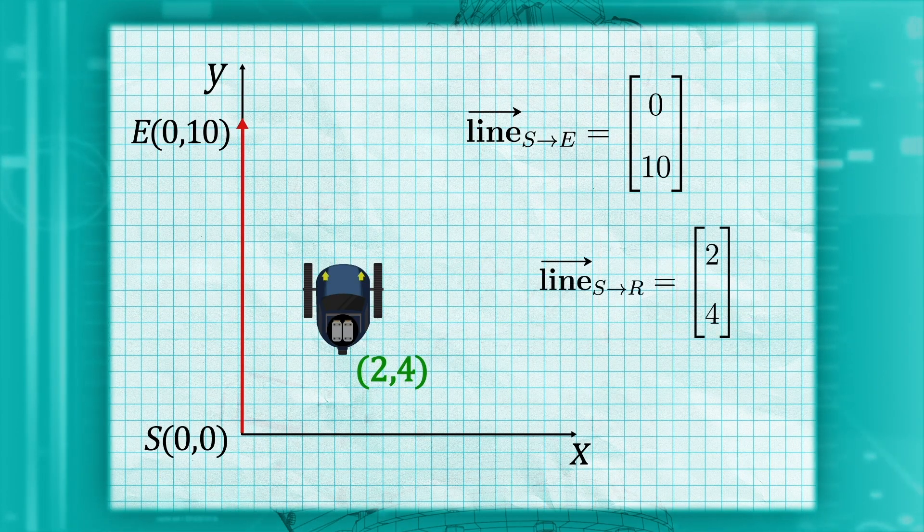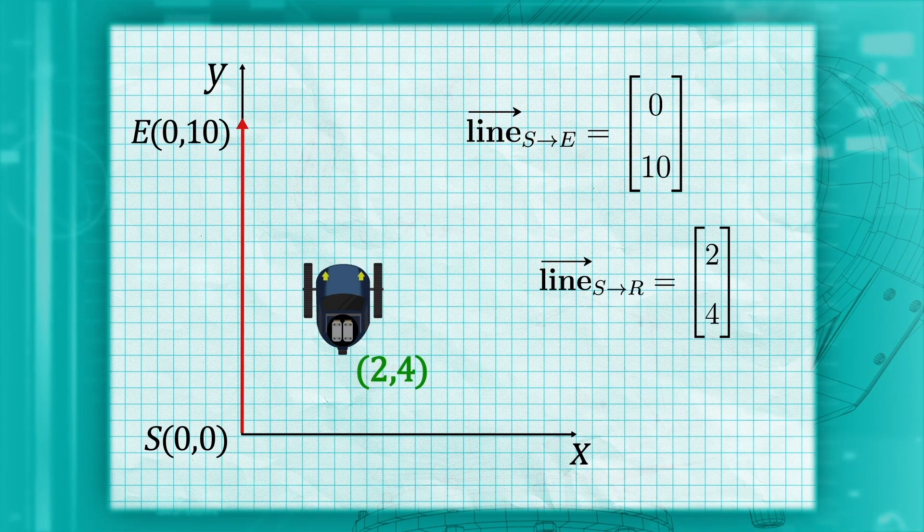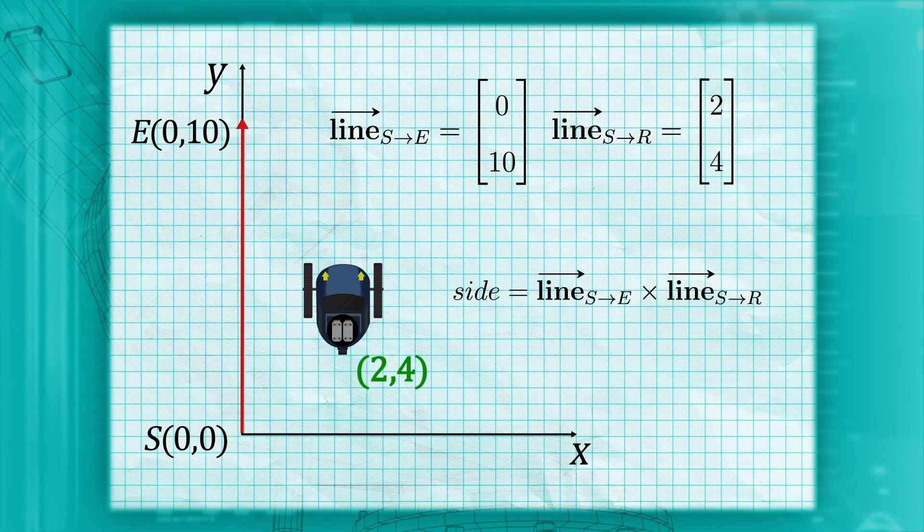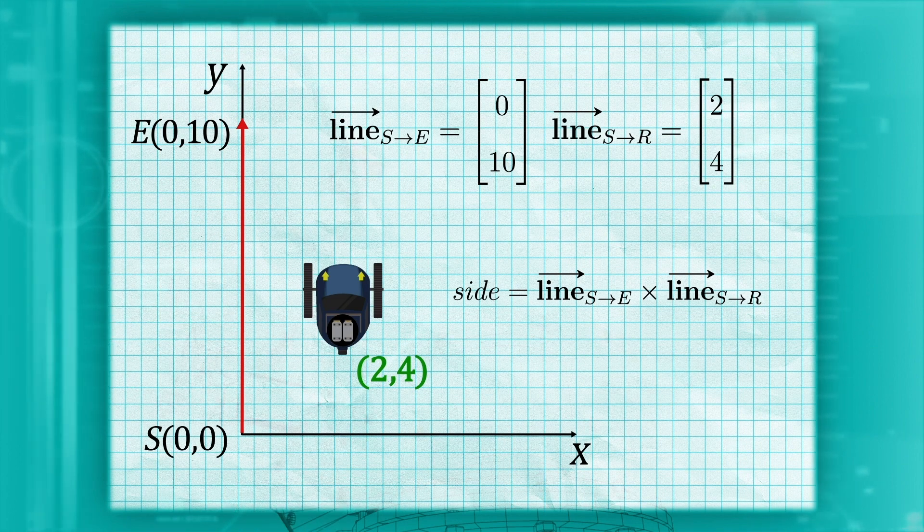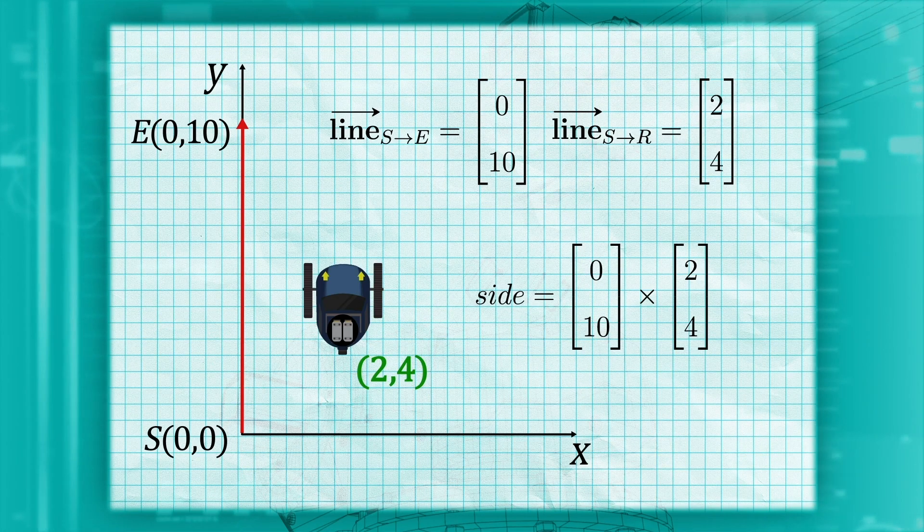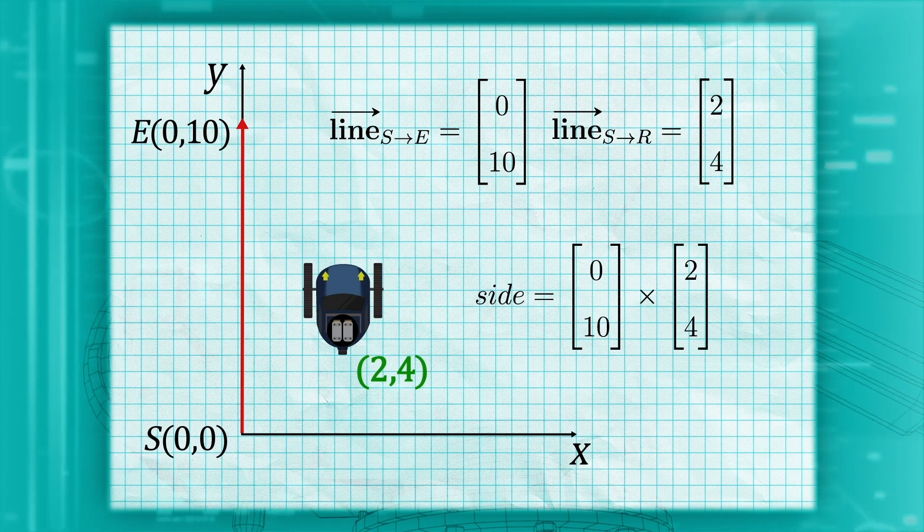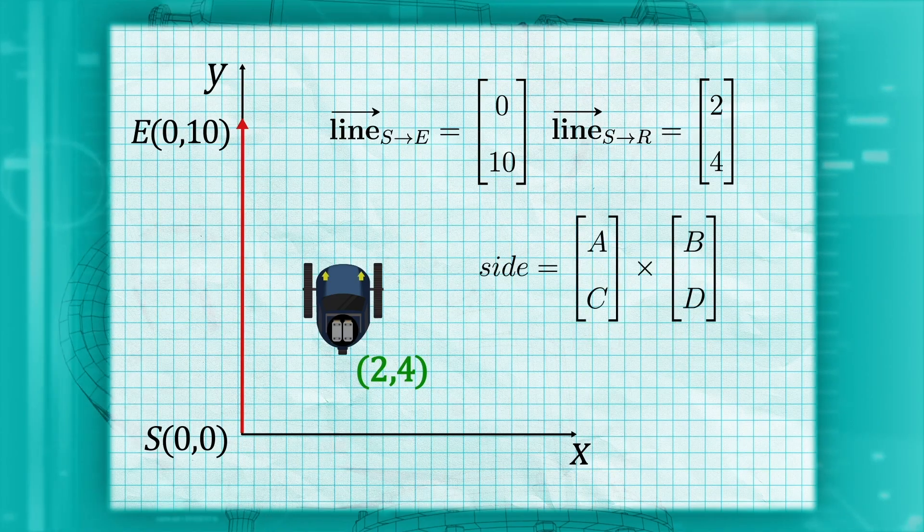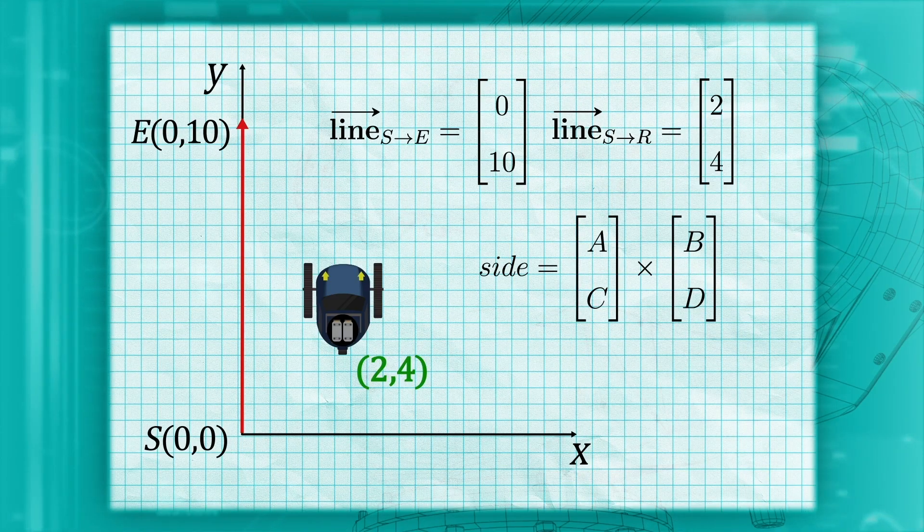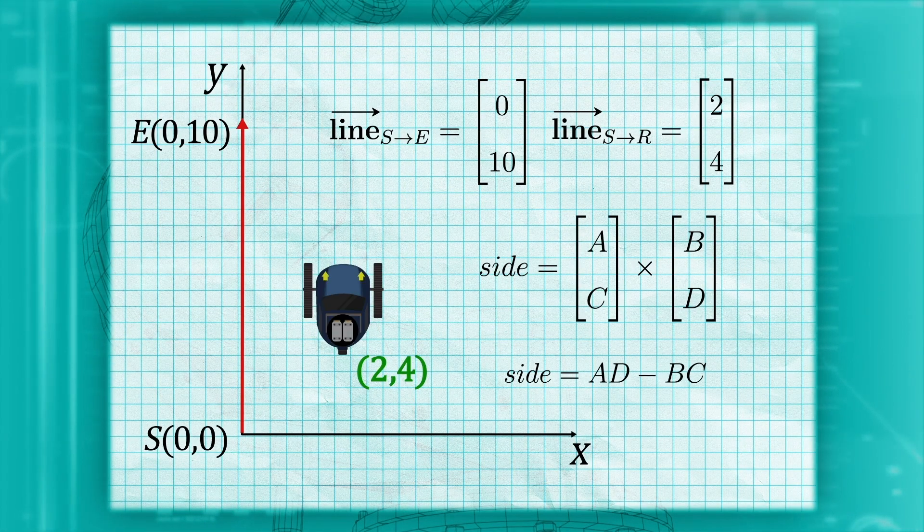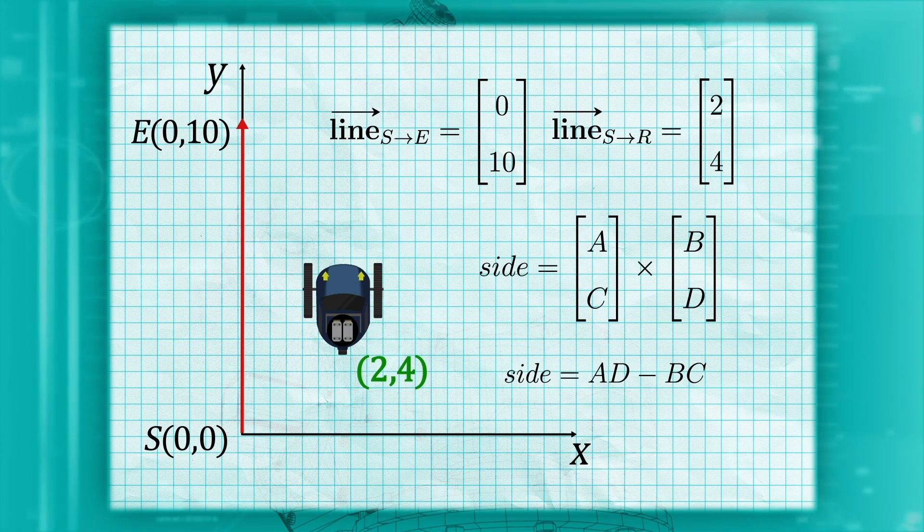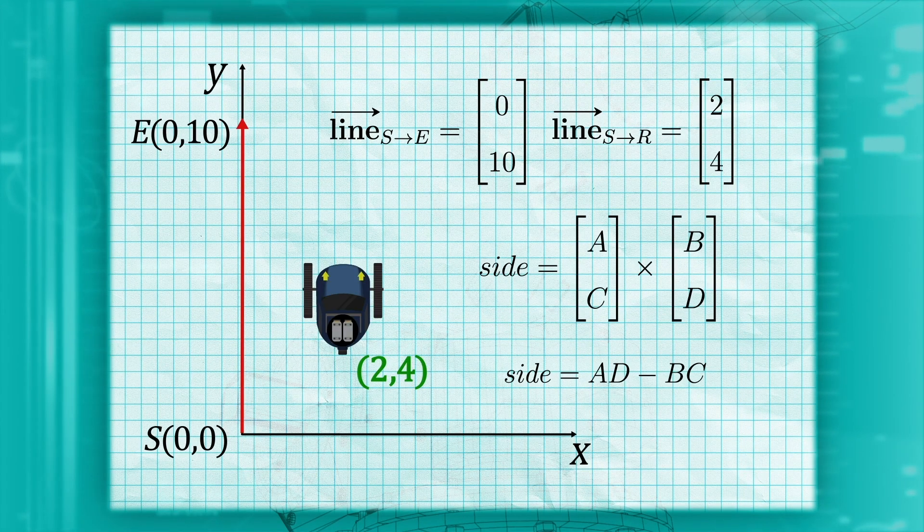We can use what is called a cross product to determine which side we are on. The side will be the cross product between our trajectory line and the line going to our robot position. So how do we calculate the cross product? If we label the elements as A, B, C, D, we get the cross product by multiplying A and D, then subtracting the product of B and C. We multiply in the shape of an X, hence the name cross product.